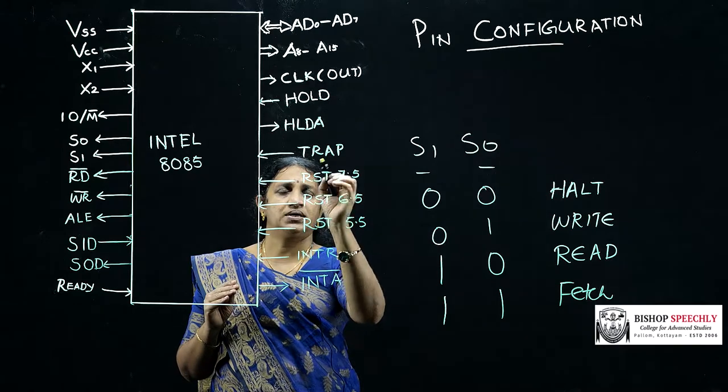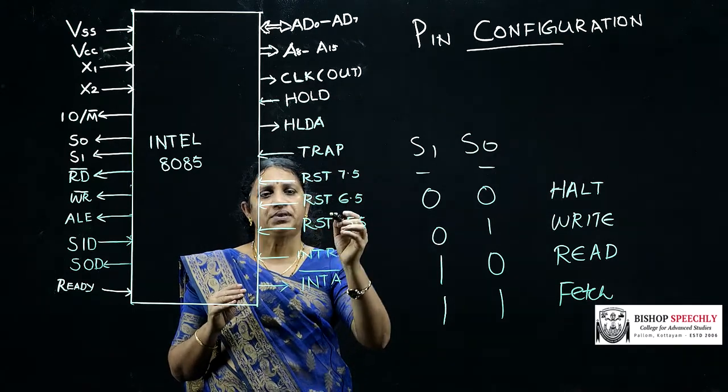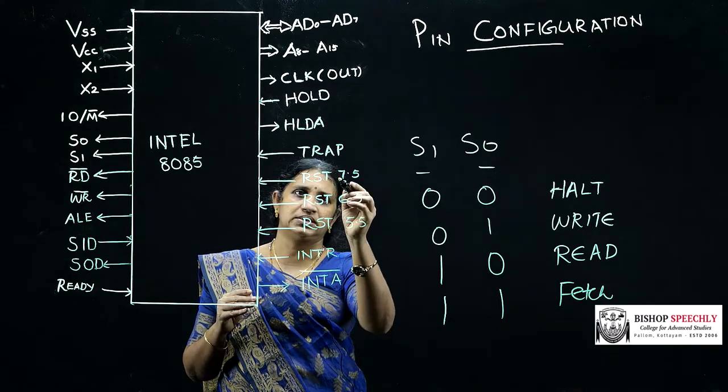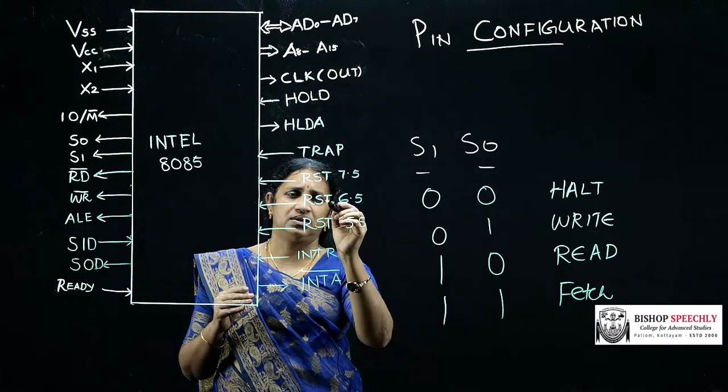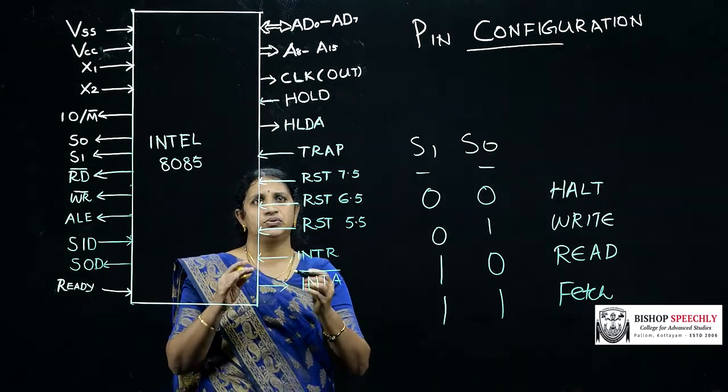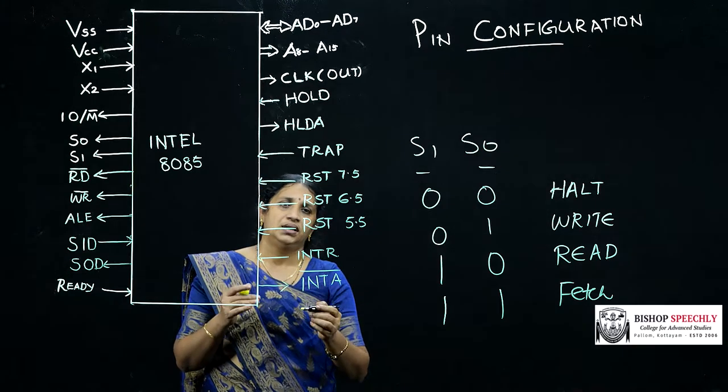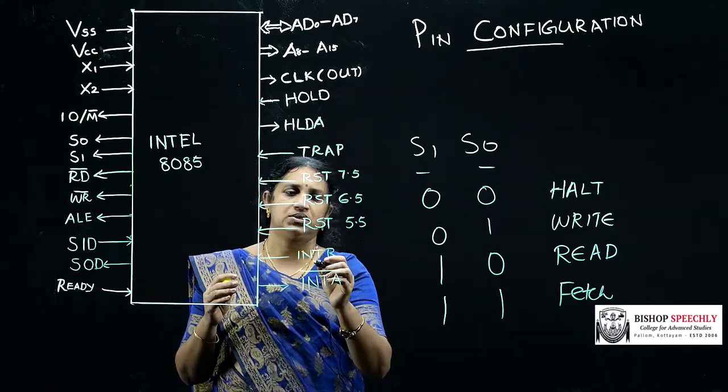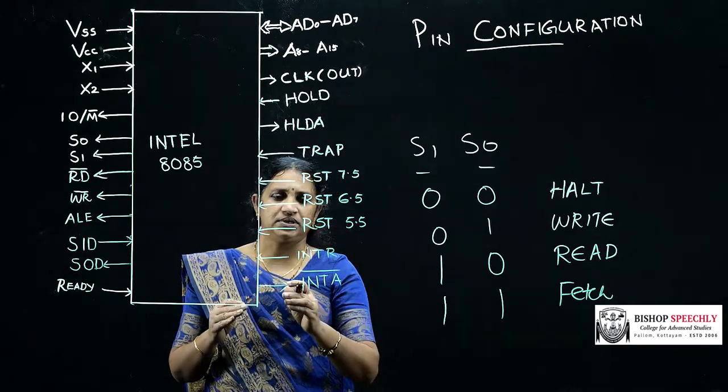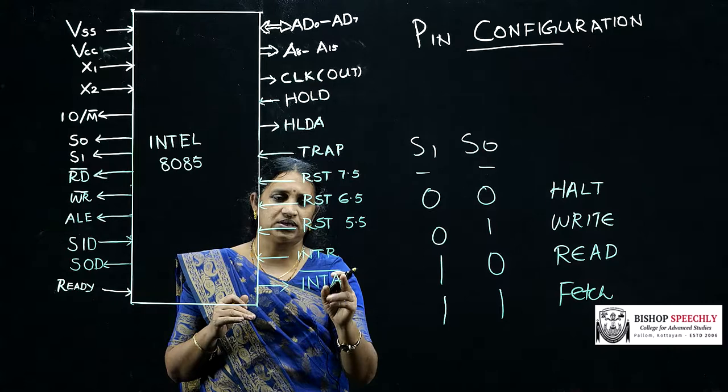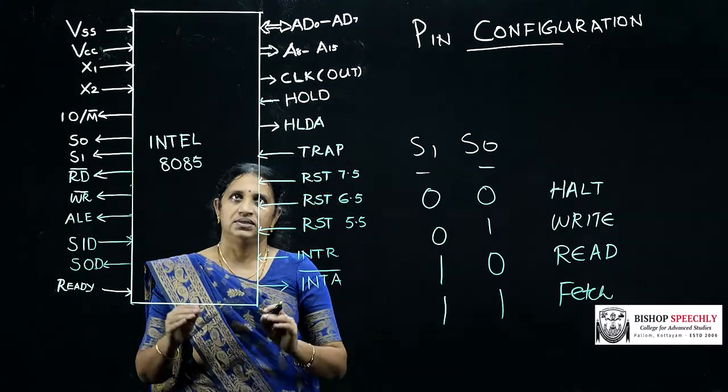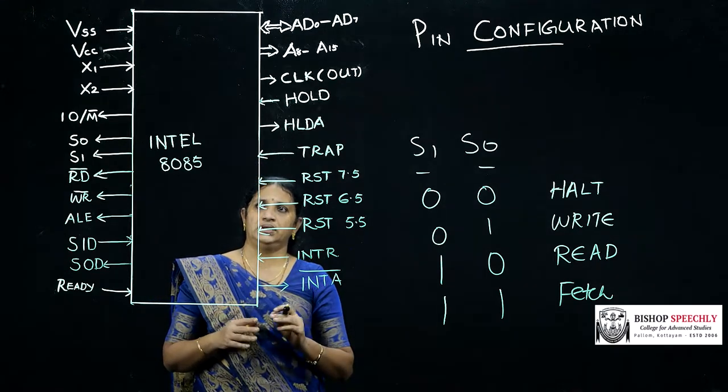The TRAP has the highest priority. The other interrupts have a lower priority. And programmers can mask these restart interrupts. And we could not mask the TRAP interrupt. It is used in emergency conditions. The lower priority interrupt is the next one, that is INTR. If an interrupt arrives, the microprocessor issues an acknowledge signal. And that signal is provided through the INTĀ line. These are the main pins used in Intel 8085.